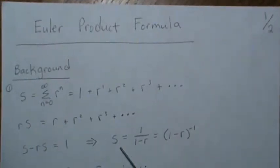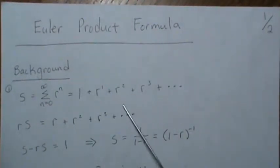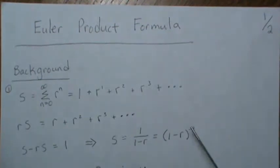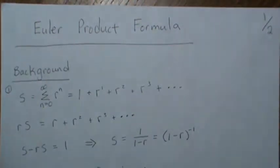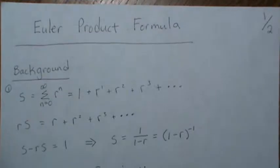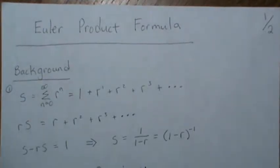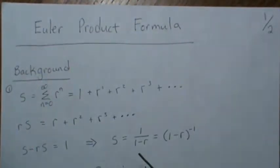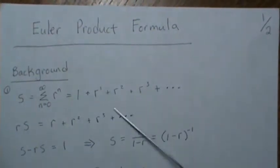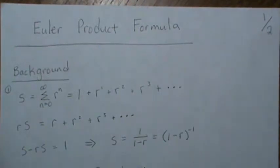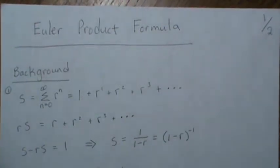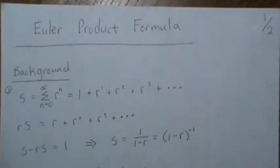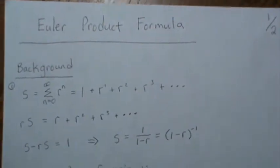Of course, the radius of convergence has to be satisfied for all these steps to be valid. You might argue that even if it's not, it's an analytic continuation, but we're not really going to go into that.